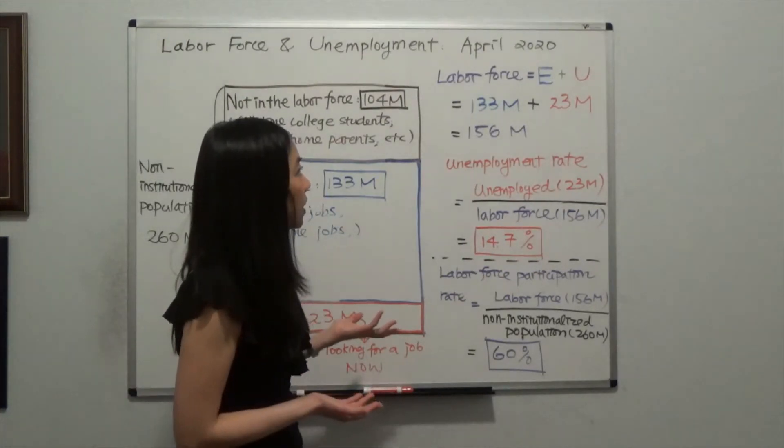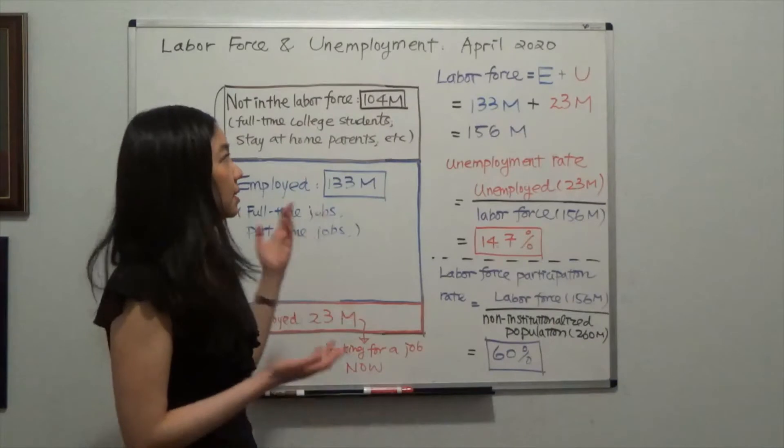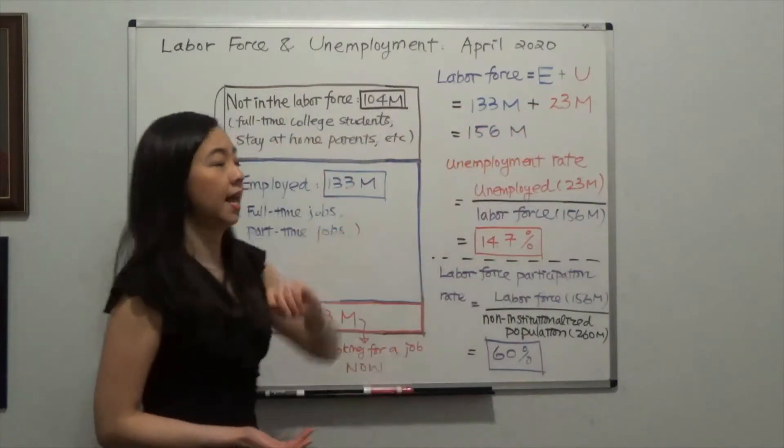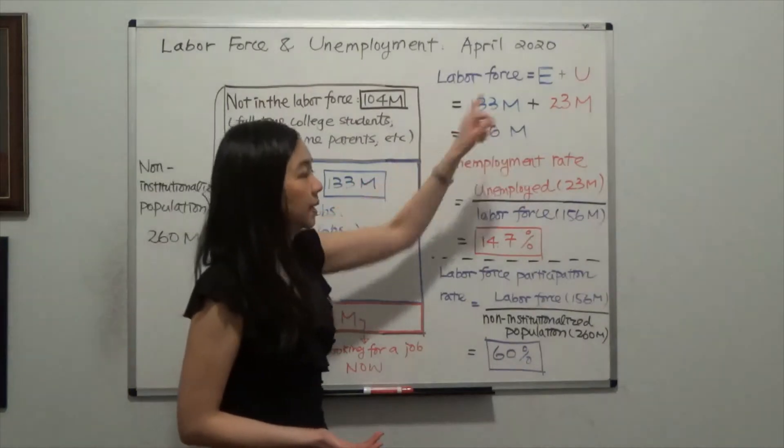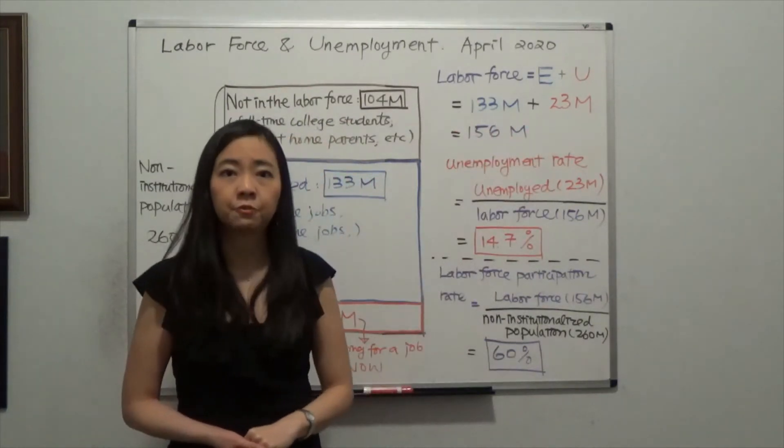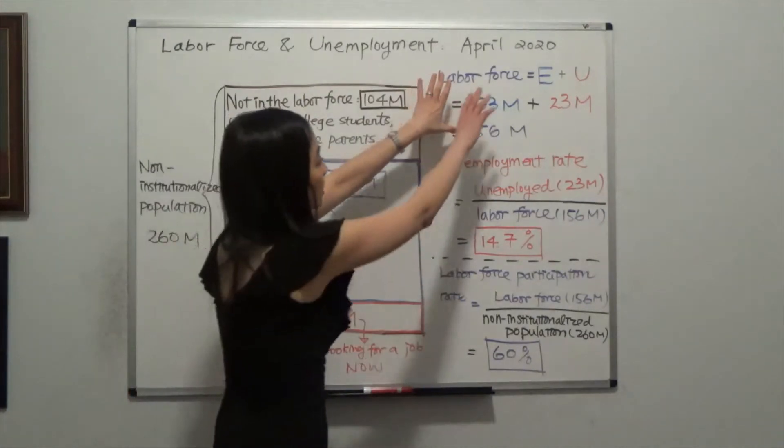So we can look at what the labor force is. The labor force is employed plus unemployed. That will be 133 million plus 23 million, which gives you 156 million. This is the labor force.